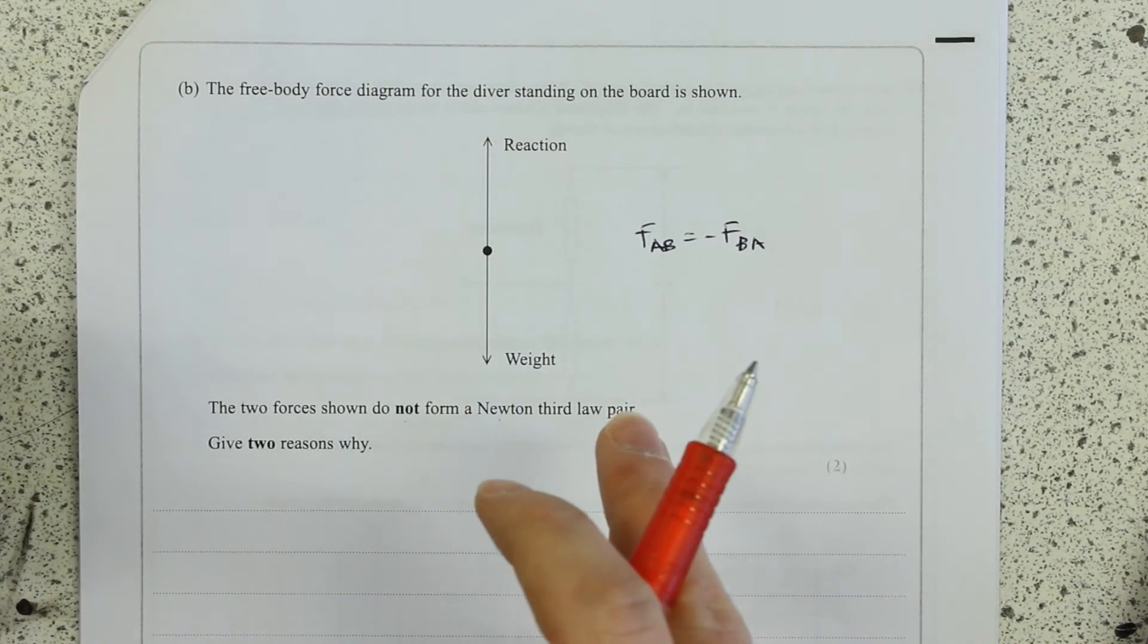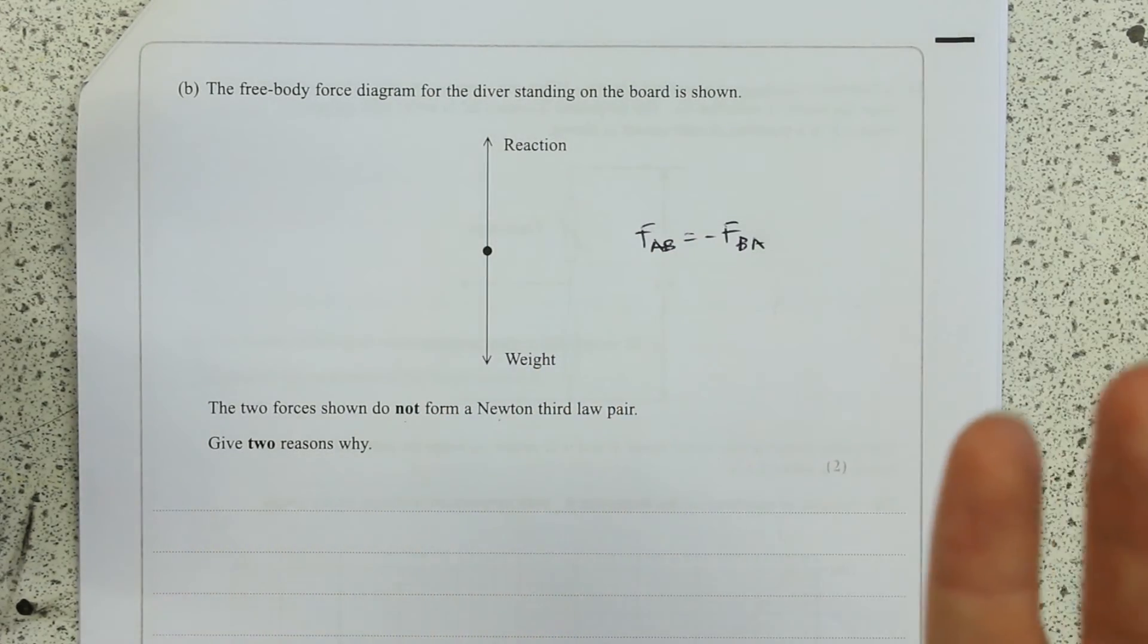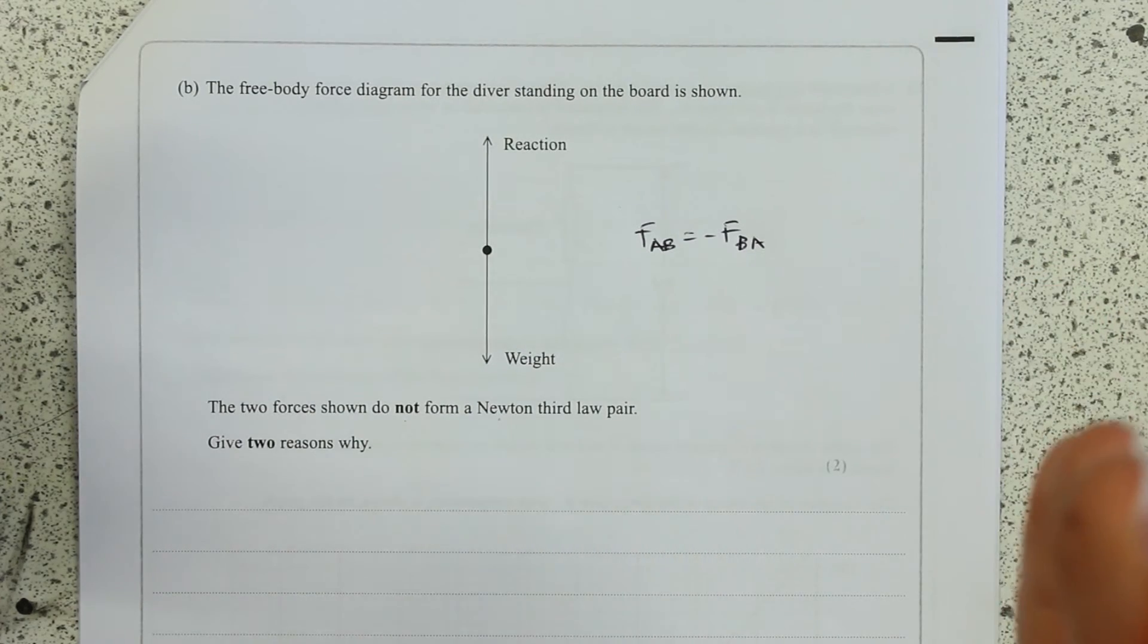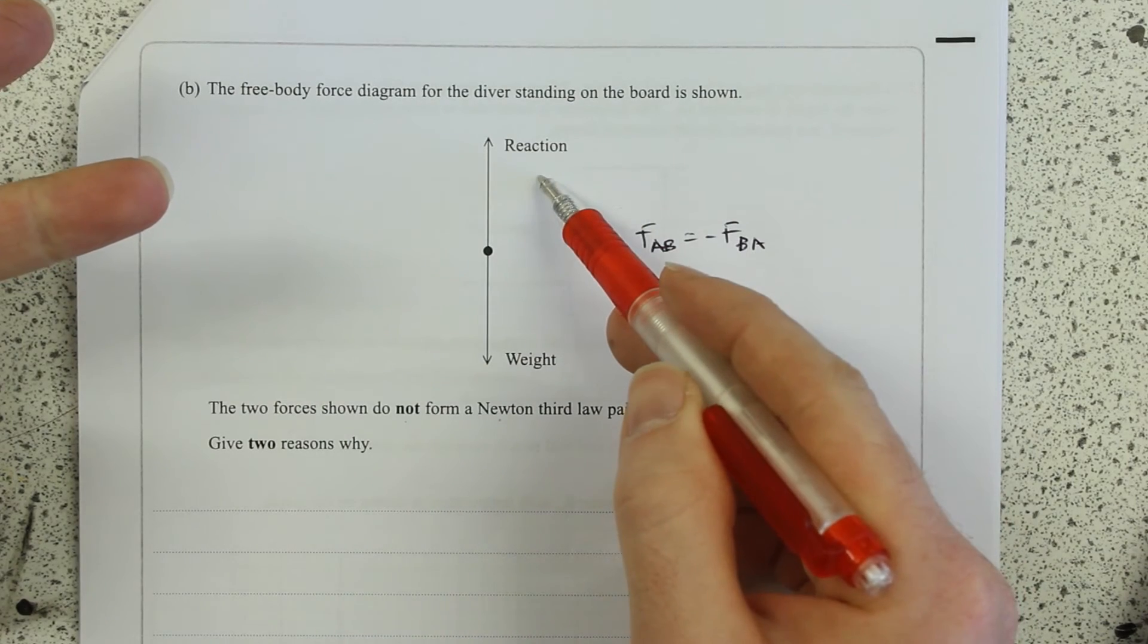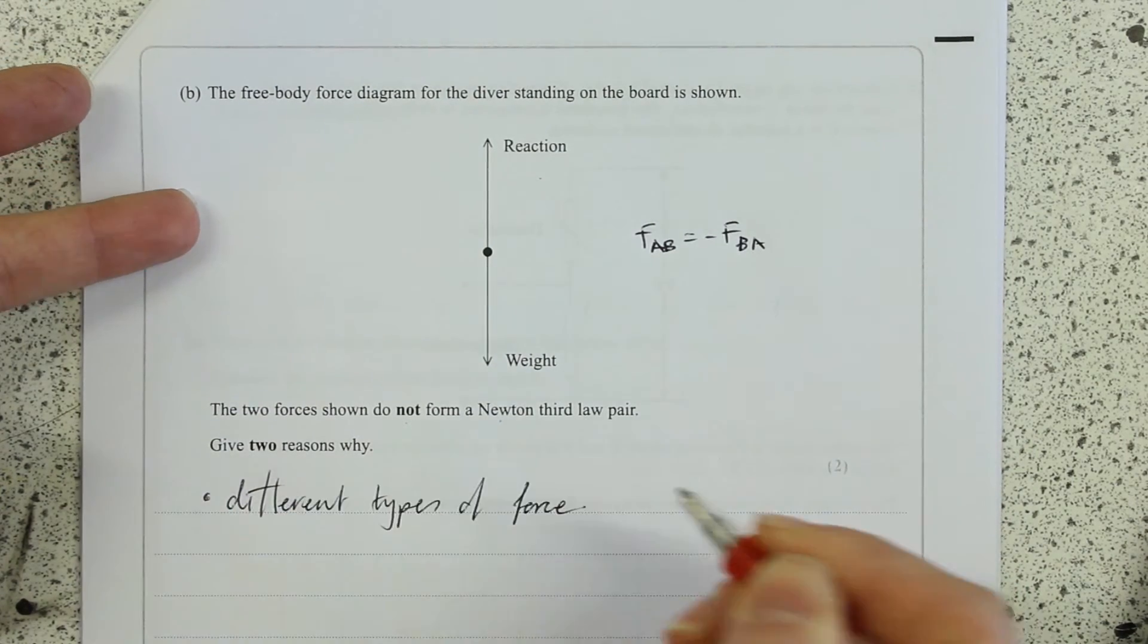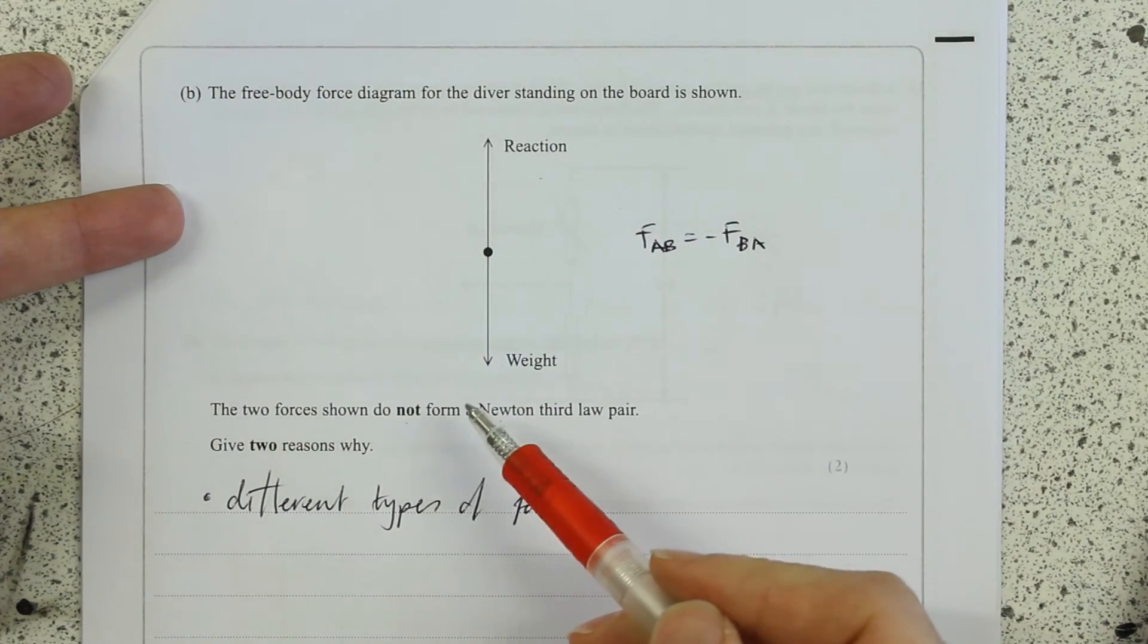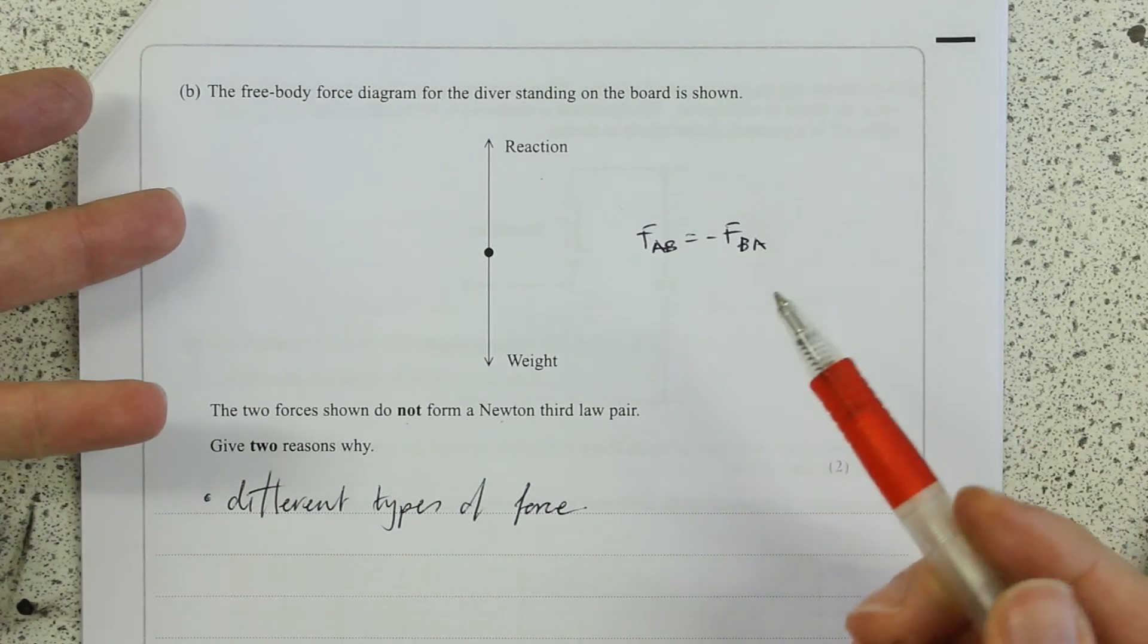Do they act for the same time? Yeah, I presume so. I mean, when he stopped standing on it, there's going to be no more reaction. So it's not that. Are they the same type? Well, that's a weight. That's a gravitational force. And that's a reaction force. So no, they are different types. What else have we got? Are they in the same line of action? Yes, they are in the same line of action. So it's not going to be that. Do they act on different bodies?